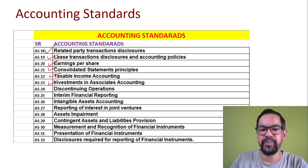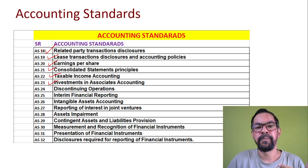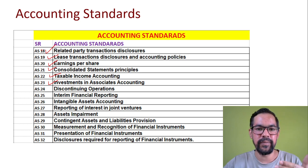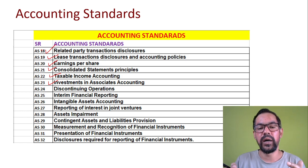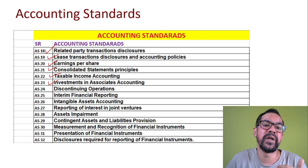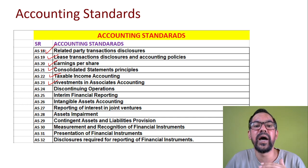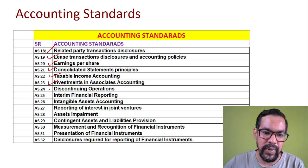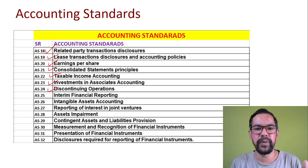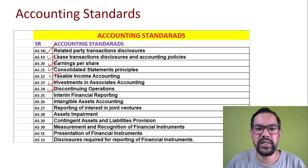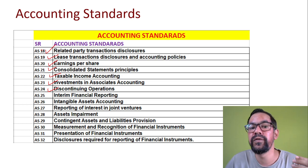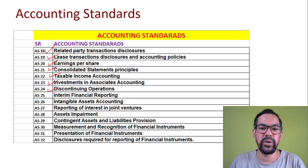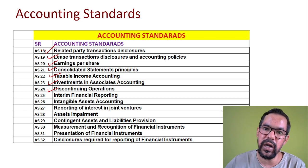Accounting Standard 23 covers Investment in Associate Accounting. If a parent company has two or three associates, it covers what amount of investment was made, and whether those associates are generating profit or loss over five or ten years. Accounting Standard 24 covers Discontinuation of Operations. If a company running five products finds that one product has been loss-making for the last two or three years and decides to discontinue it, they have to disclose that as per Accounting Standard 24.